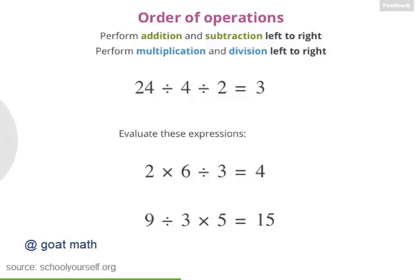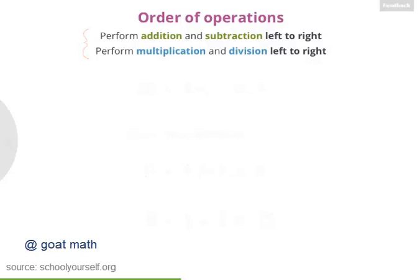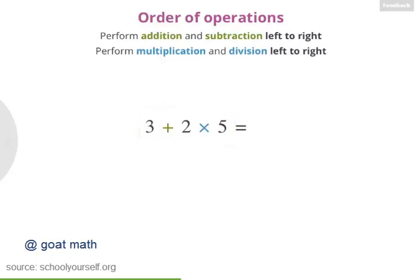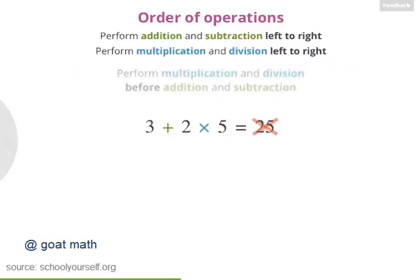Now, how can you evaluate expressions that combine these operations, like this one? 3 plus 2 times 5. Well, if you work from left to right, 3 plus 2 is 5, and then multiplying by 5 gives you 25. But order of operations says this is wrong, because there's another rule.